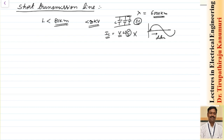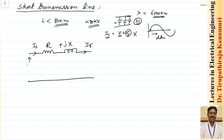The resultant line is called a short transmission line. In the short transmission line, we represent it with a series resistance R and inductive reactance X. The sending end current is Is, the receiving end current is Ir, the sending end voltage is Vs, and the receiving end voltage is Vr — all taken as phasors.